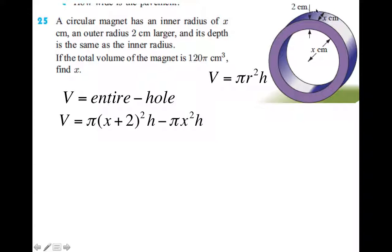x plus 2 is our radius. So π times the radius squared times h, which is going to be that value there in a moment.